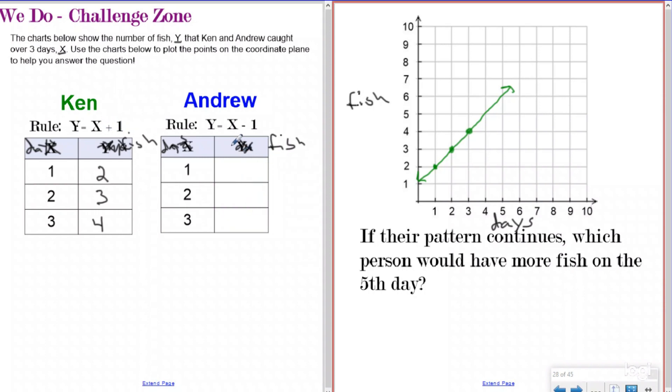Now, if I go back to Andrew, Andrew had a different rule. He had Y equals X minus one. So if on the first day, if you plug one in for X, one minus one is zero. So on the first day, he caught zero fish.